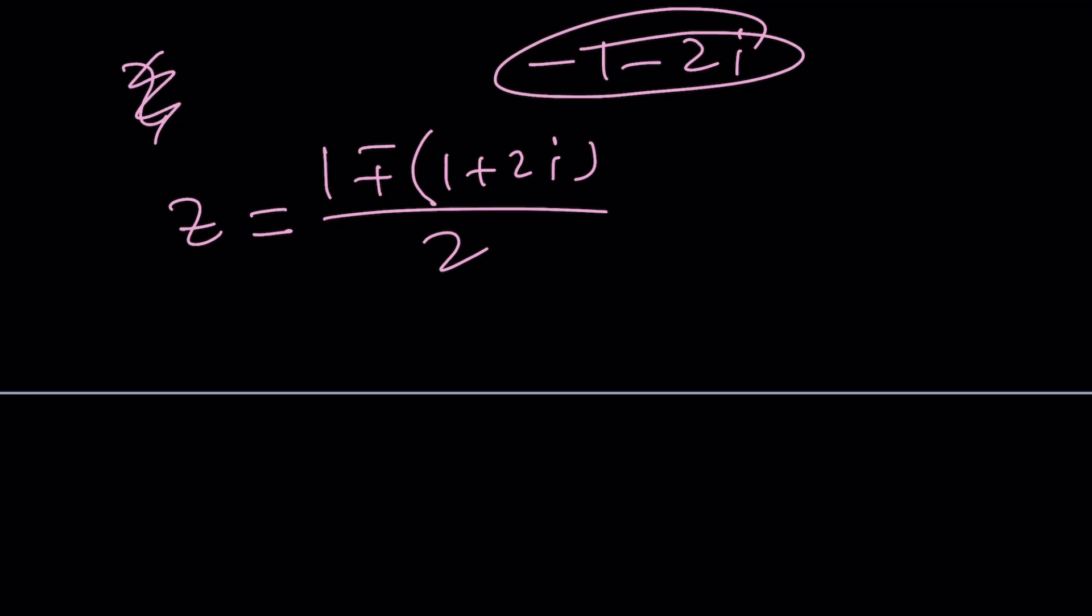All right. Now, if I go with the plus sign, 1 plus 1 plus 2i over 2, that is going to be 2 plus 2i, which is 1 plus i. You can call that z sub 1 if you want. And z sub 2 is going to be 1 minus 1 minus 2i divided by 2. 1 is going to cancel out. And we're going to end up with negative i. Beautiful.